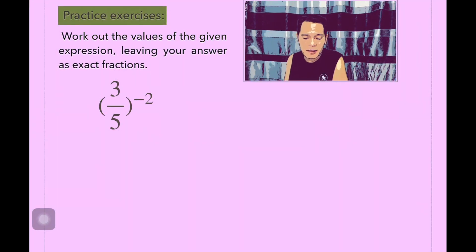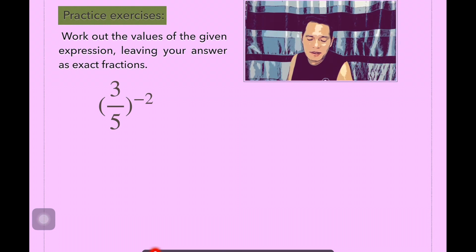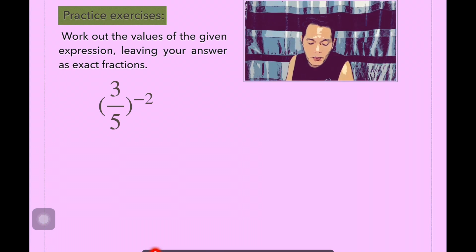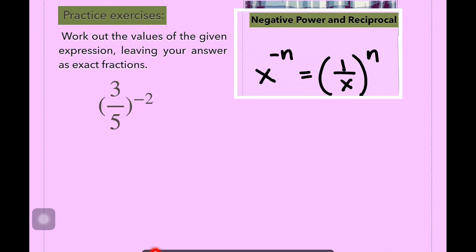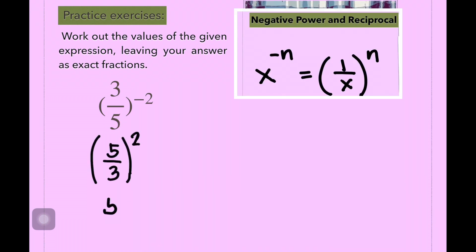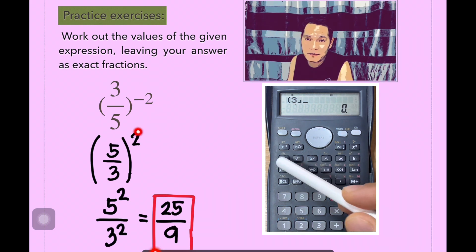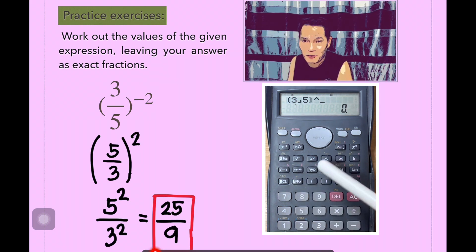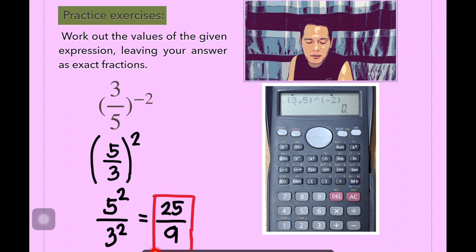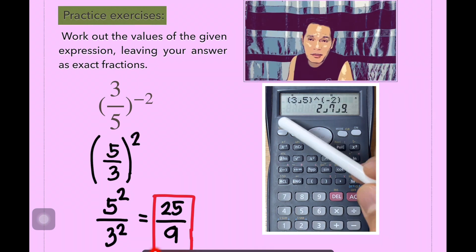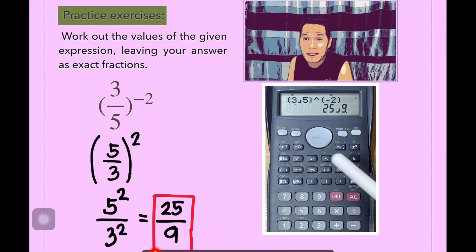Let's have an example: work out the values of the given expressions, leaving your answer as exact fractions. We have 3 over 5 to the power of negative 2. Applying the concept, the base here is 3 over 5 — we get the reciprocal of the base, which is 5 over 3, and change the negative exponent to positive. We only do that when the exponent is negative. Then we simplify: 5 to the power of 2 over 3 to the power of 2, which equals 25 over 9. That's the final answer.